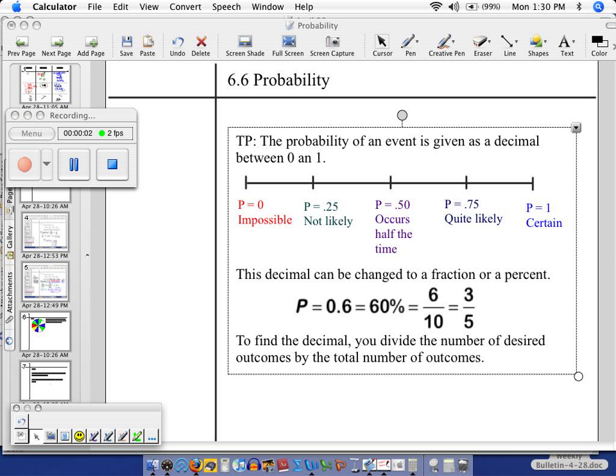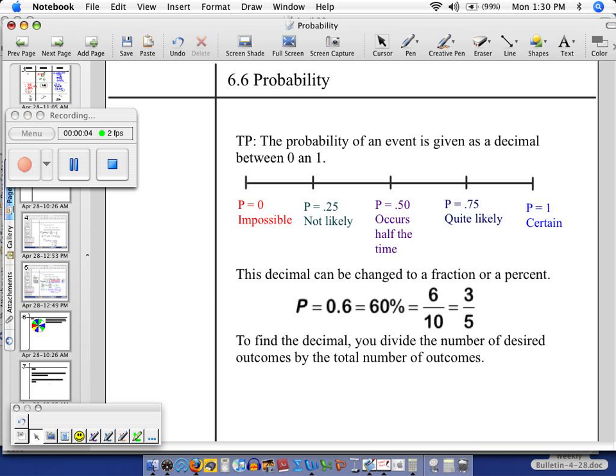Today's teaching point is on probability. Probability means the likelihood of an event happening. The probability of an event is given as a decimal, and this decimal is between the number 0 and 1.